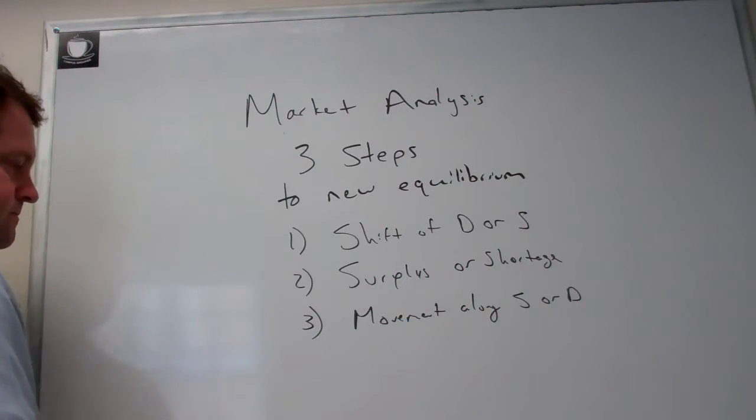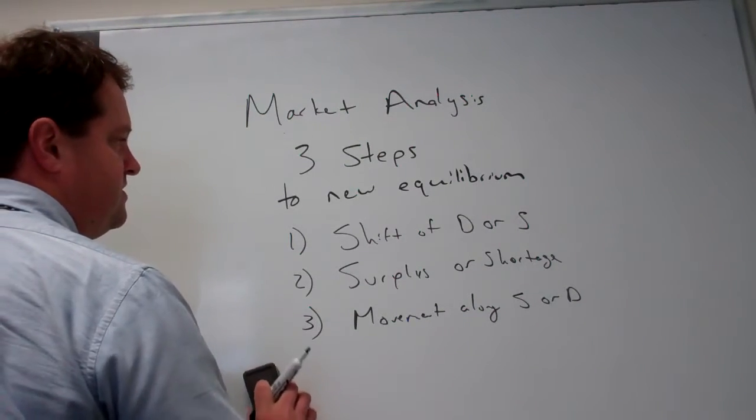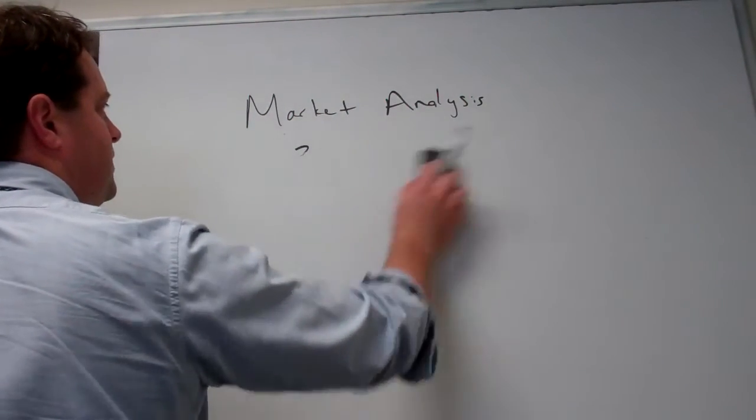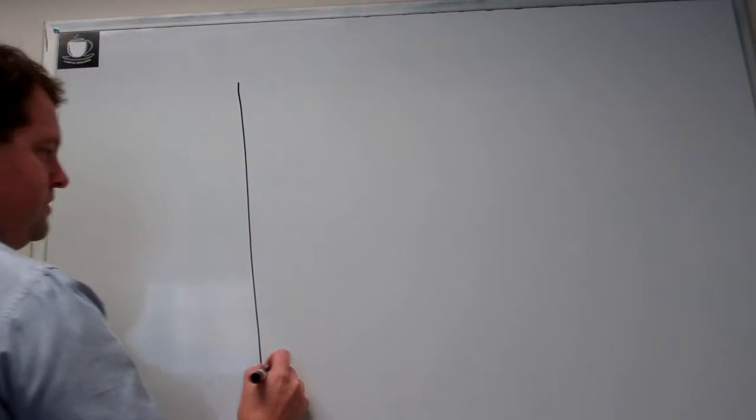If supply shifts, we'll see a movement along the demand curve to get back to the new equilibrium. Let's go through an example and see how these three steps can be seen with supply and demand. So let's say we've got a market in equilibrium.